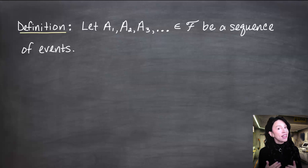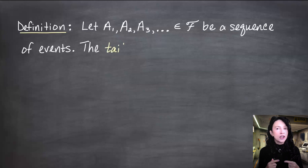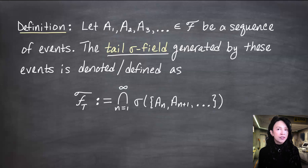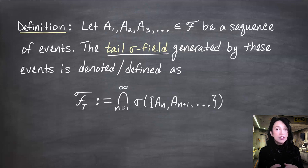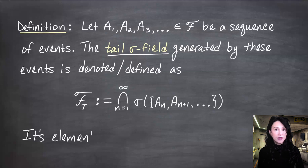Consider a sequence of sets A1, A2, A3, etc. from the underlying sigma field. I want to consider a sigma field that can be built out of the end of this sequence, no matter when you start looking. I'm going to define a tail sigma field, call it curly F sub capital T, and define it to be the intersection of sigma fields of A_n, A_{n+1}, A_{n+2}, on up. This is another sigma field by definition, and events in the tail sigma field are known as tail events.